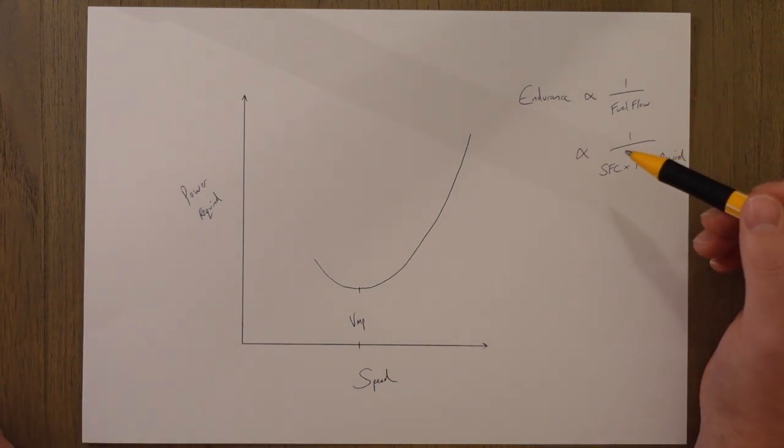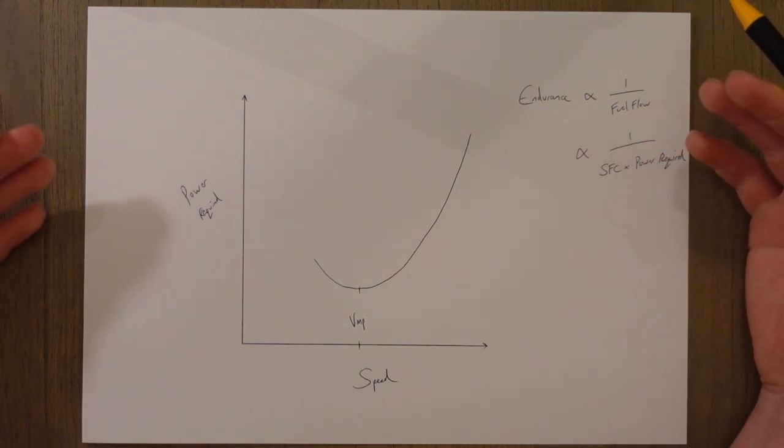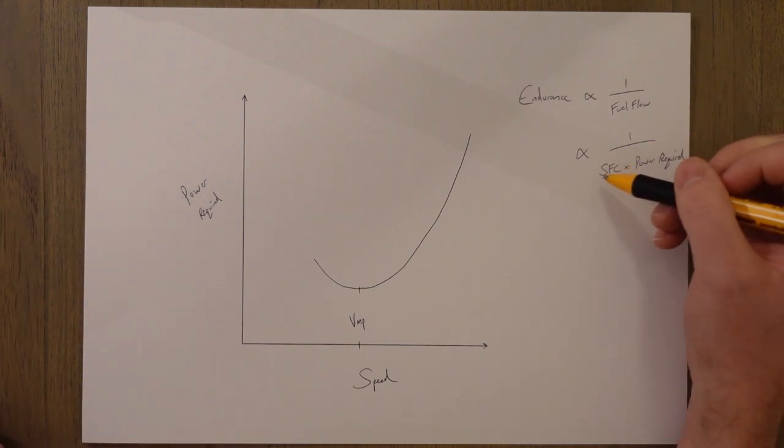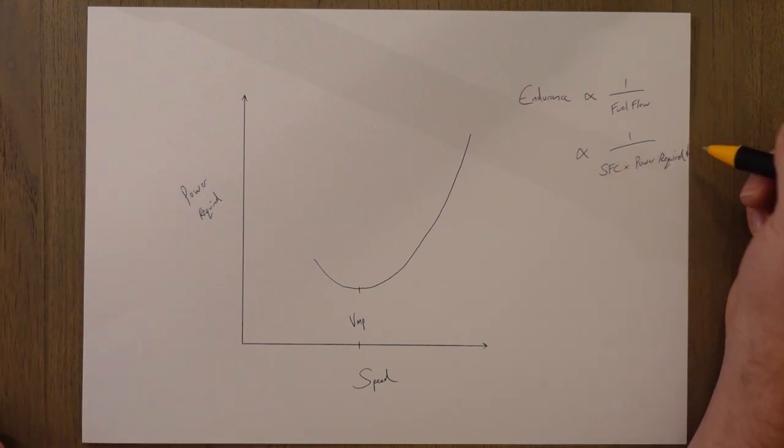And again we can see from this equation that the speed for endurance to be maximized would be where we have a low specific fuel consumption and a low amount of power required which occurs at Vmp when we're flying in a propeller.